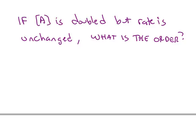Here's the third one. This time we double the amount of A, but the rate doesn't change. What's the order in that case?